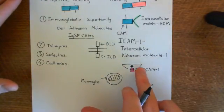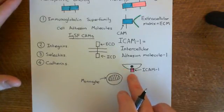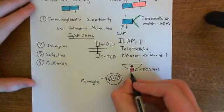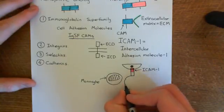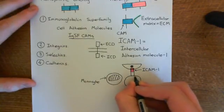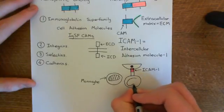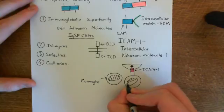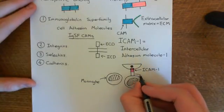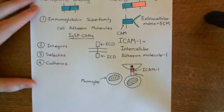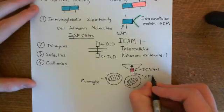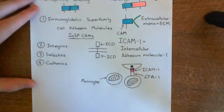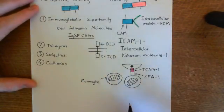Usually in calm tissue, endothelial cells do not express ICAM-1, and therefore monocytes will not bind to them. But if the tissue becomes infected and then inflamed, the endothelial cells will be activated to express ICAM-1, which will bind to a cell adhesion molecule that is always expressed on monocytes.